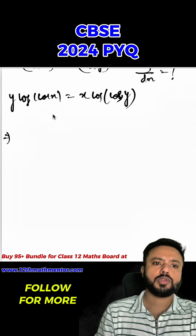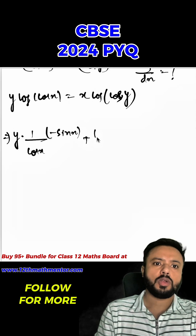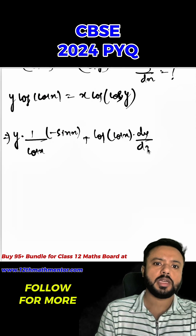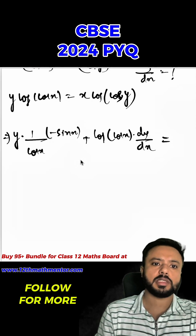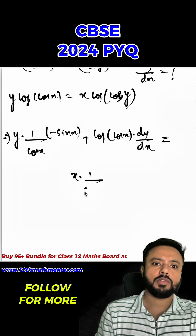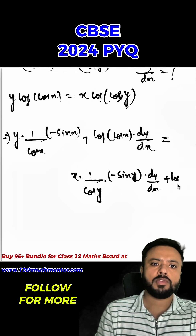Now we will differentiate both sides using the chain rule and product rule. Differentiating the LHS: y into 1 by cos x into negative sin x, plus log of cos x into dy upon dx. For the RHS: x into 1 by cos y into minus sin y into dy upon dx, plus log of cos y.